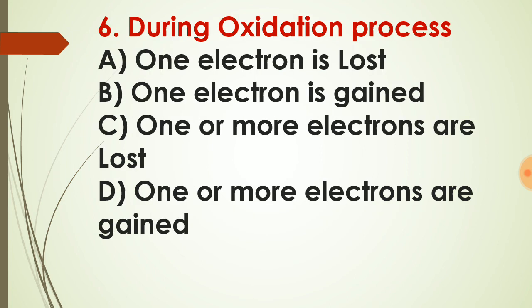Question number six: during the oxidation process — in oxidation, there is a loss of electrons; one or more electrons are lost. Option C is the correct answer for question number six. The opposite of oxidation is reduction. Since oxidation is the loss of one or more electrons, reduction is just the opposite. After knowing this, try to find what is oxidation and what is reduction.